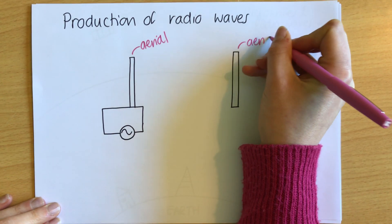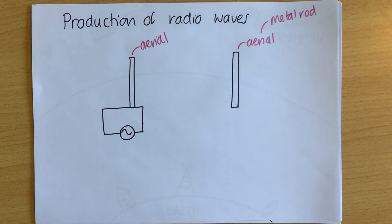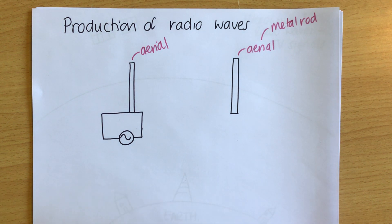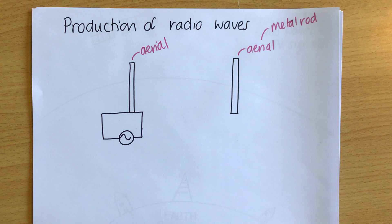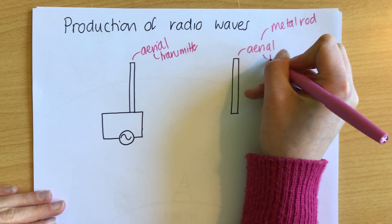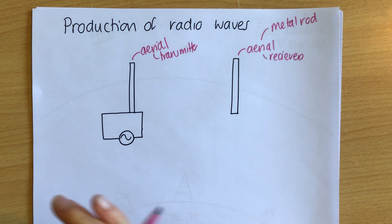An aerial is simply a metal rod. Back when terrestrial TV was more common, you could use a metal coat hanger as an aerial because all you need is a metal rod. Aerials can act as transmitters, meaning they give out radio waves, or as receivers. But a transmitter can act as a receiver and a receiver can act as a transmitter — it's just a metal rod; it depends whether it's giving out or taking in radio waves.